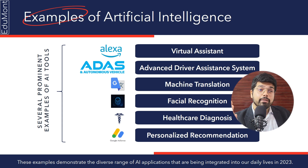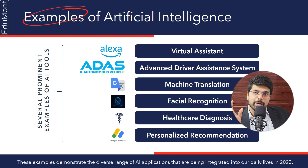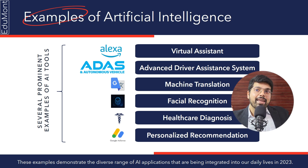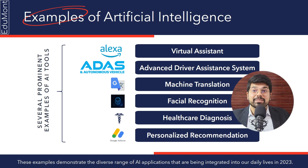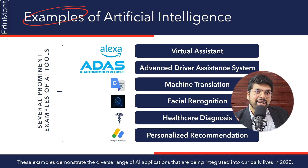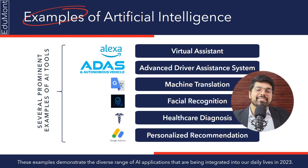Machine translation is another easy example. Suppose on my Instagram there's a post in another language — AI helps me by offering a translation option. You also have Google Translate where you can paste paragraphs and translate them into any language. By the way, I proposed to my girlfriend by saying 'I love you' in 52 languages using AI.